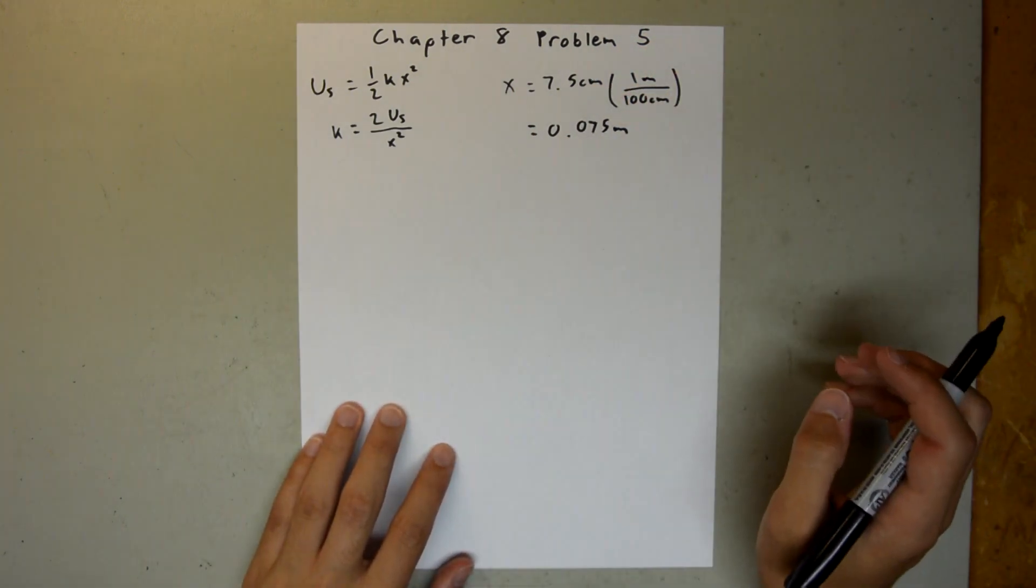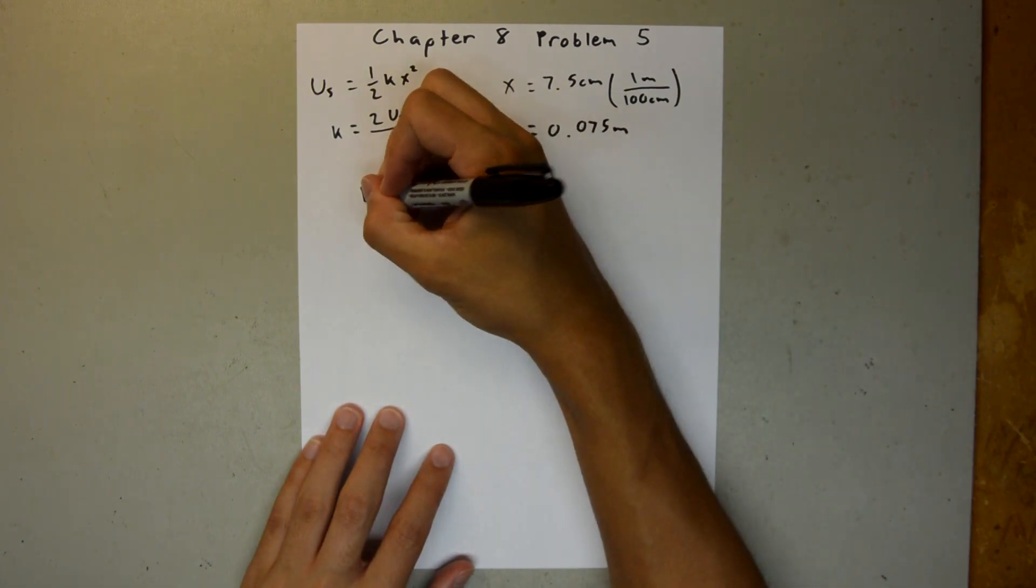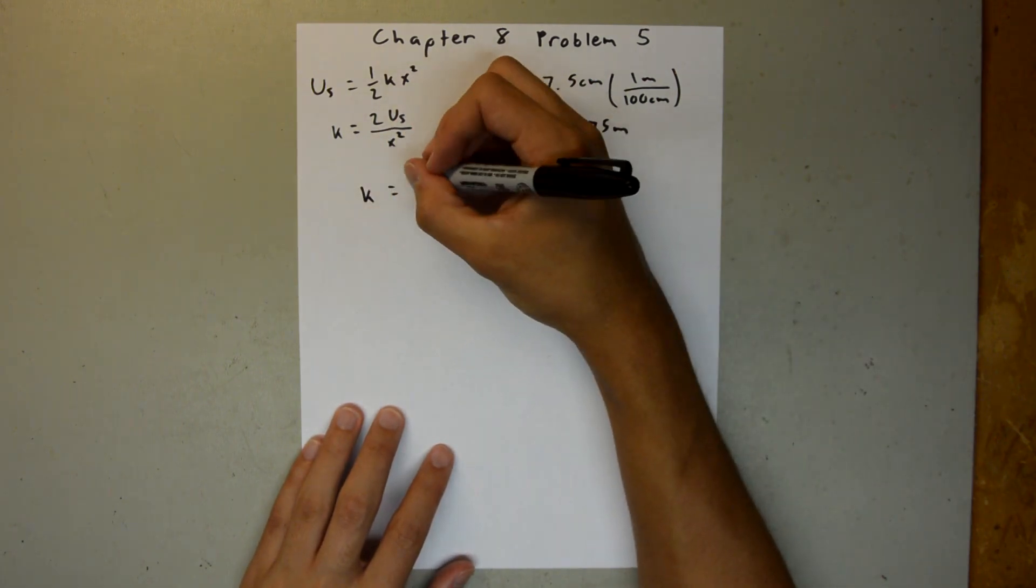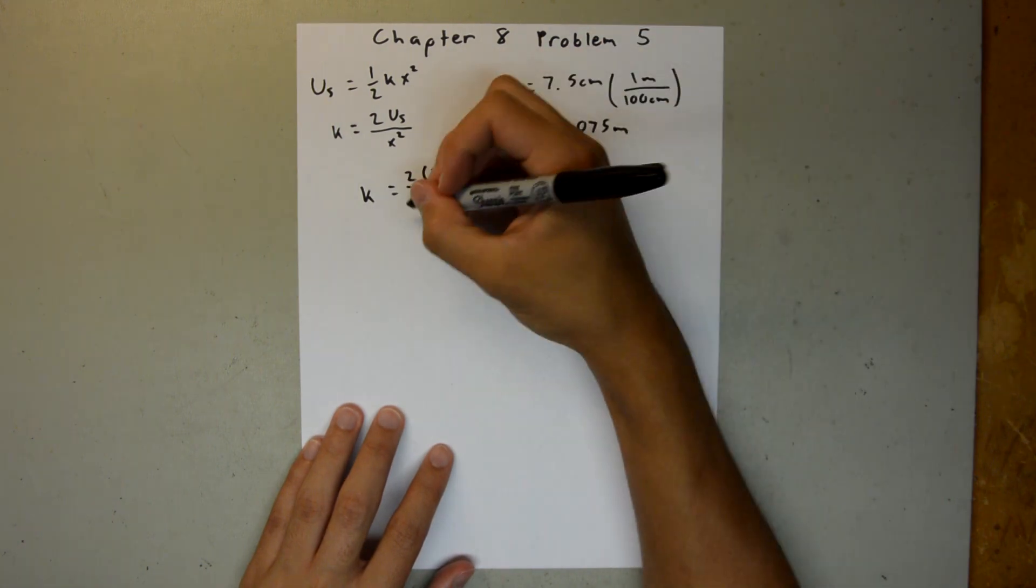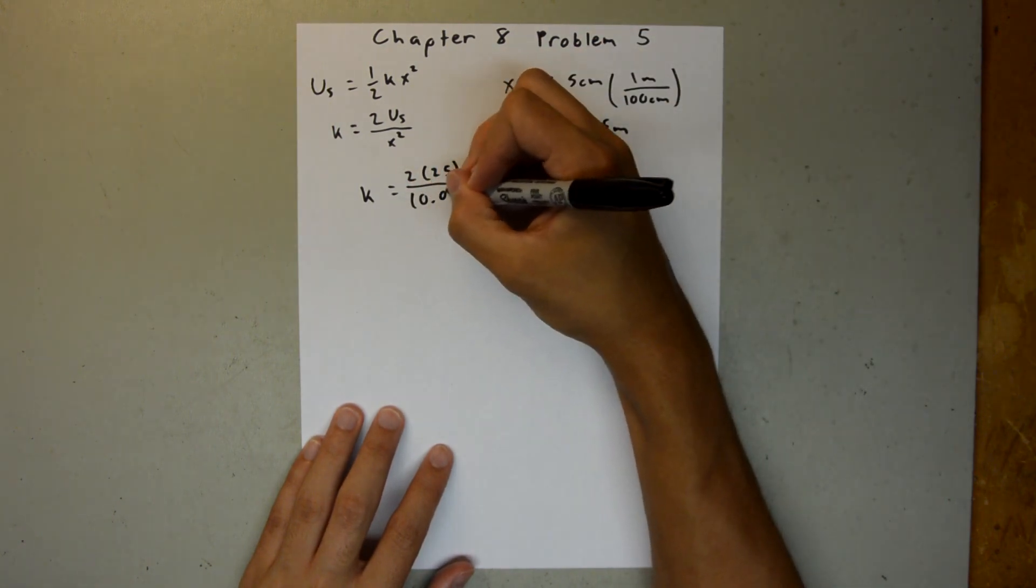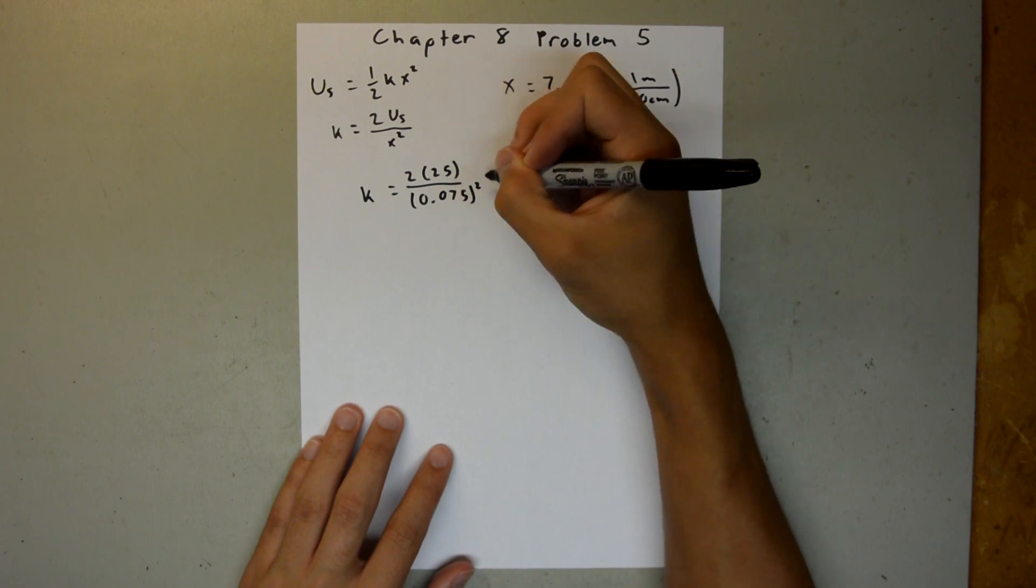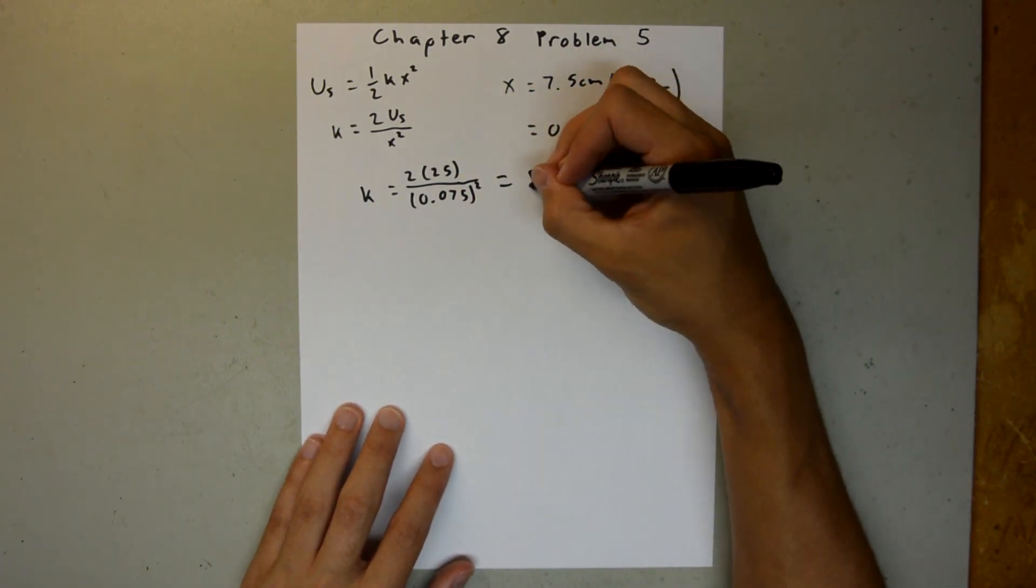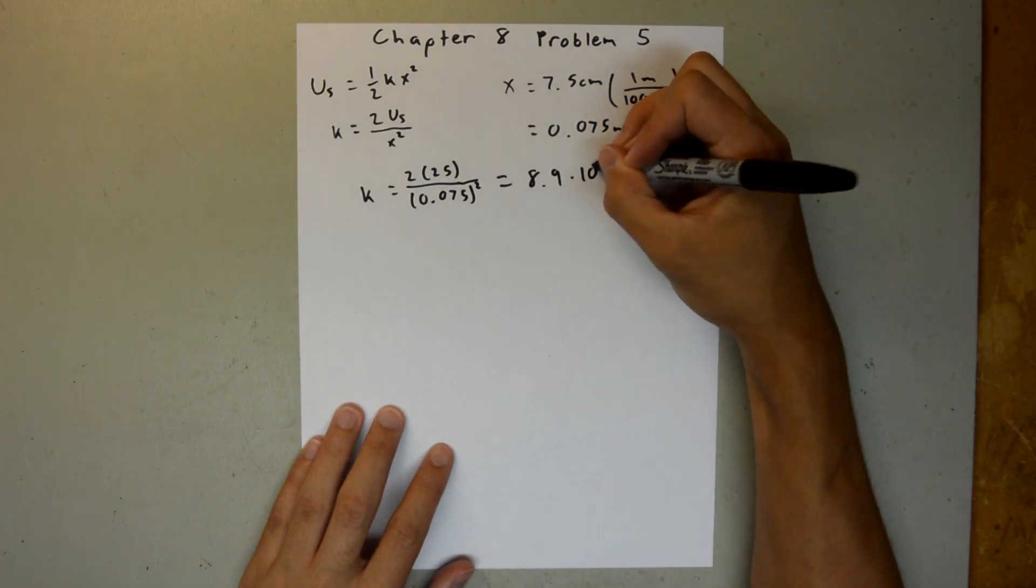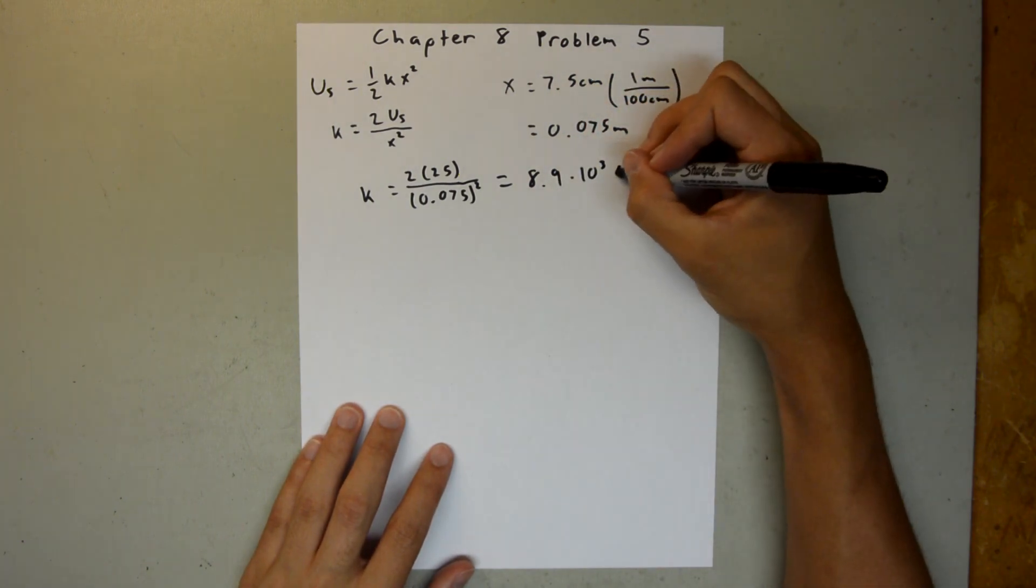Now we have all the values we need to plug into the problem. We can say k is equal to 2 times 25 over 0.075², and when you plug that into your calculator, you should get 8.9 × 10³ newtons per meter.